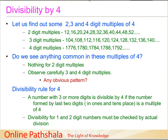Why we do that will become clear very soon. These are the two-digit multiples of 4: 12, 16, 20, 24, 28, 32, 36, and so on. Then I have taken three-digit multiples starting from 104, 108, 112, 116, 120, 124, and so on. And then I have also taken a few four-digit multiples: 1776, 1780, 1784, and so on.